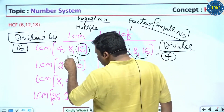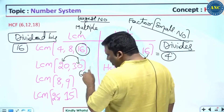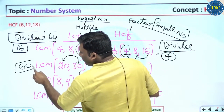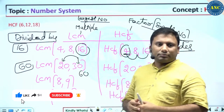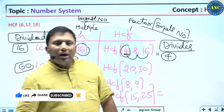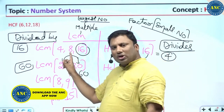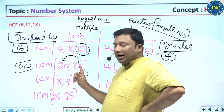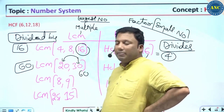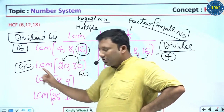If the largest number is not divisible by every other number, take the multiple of that number. For example, with 20 and 30: 30 is not divisible by 20, so take the next multiple — 60. 60 is divisible by 20. So write down 60 as the LCM. For LCM, if the largest number doesn't divide all others, go to the multiples of the largest number.